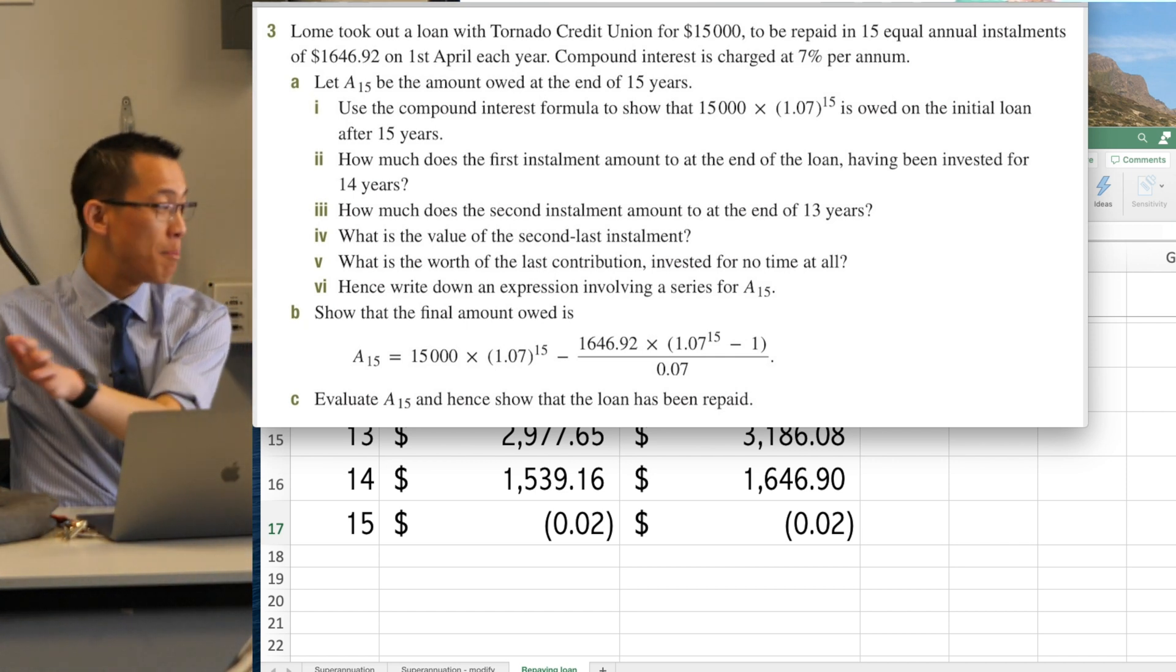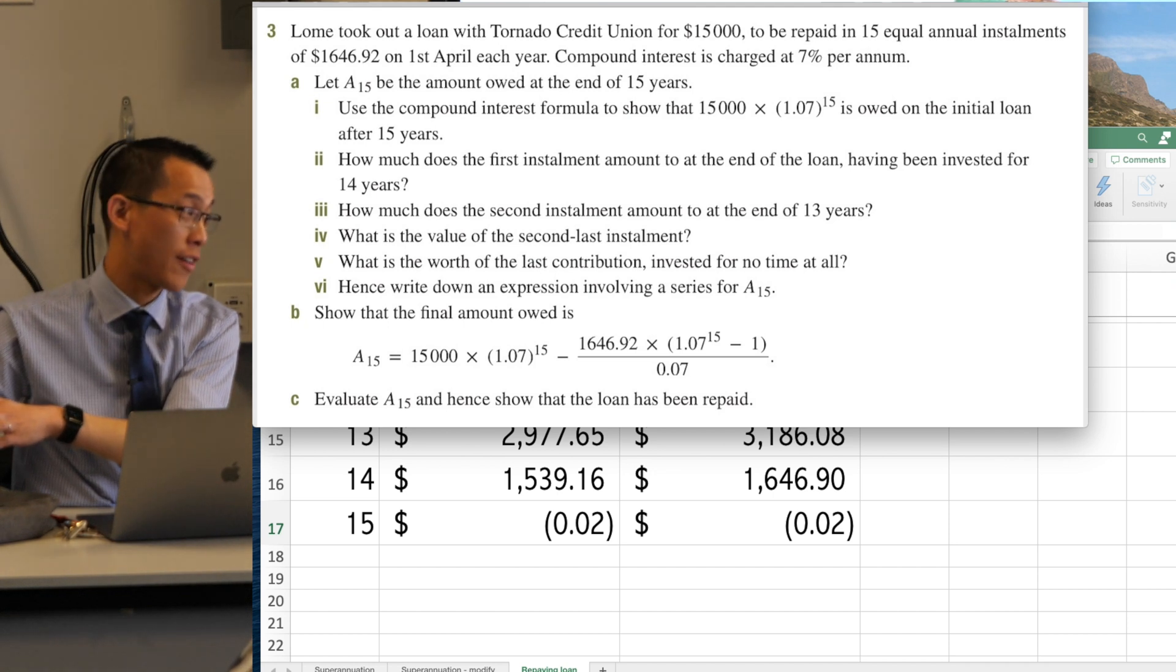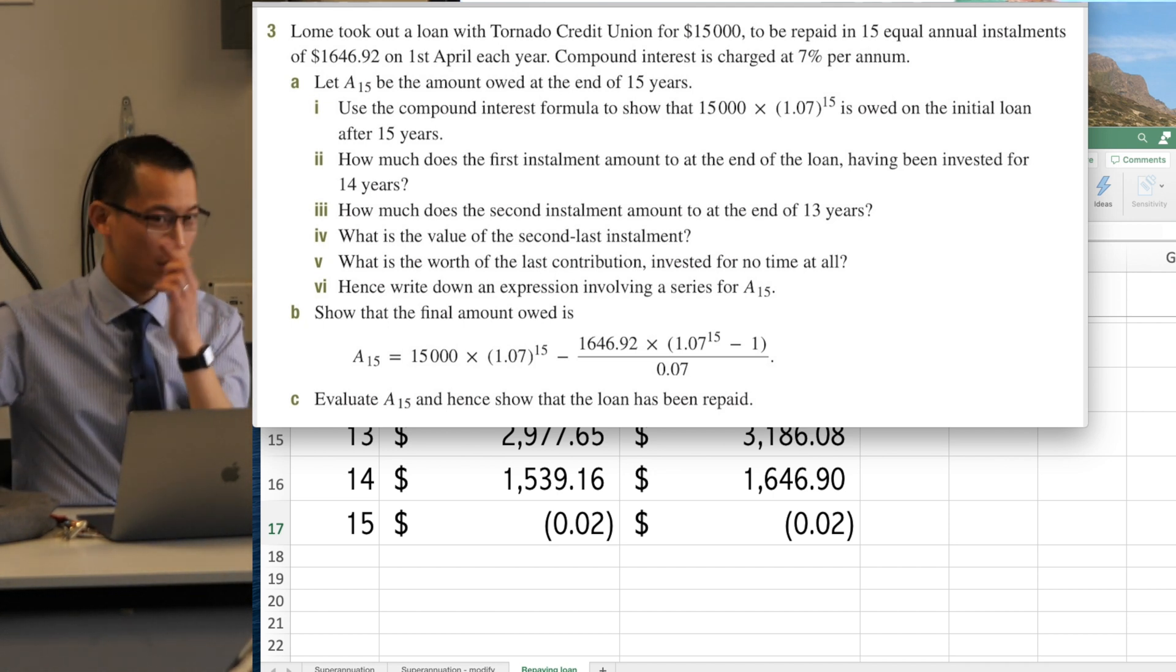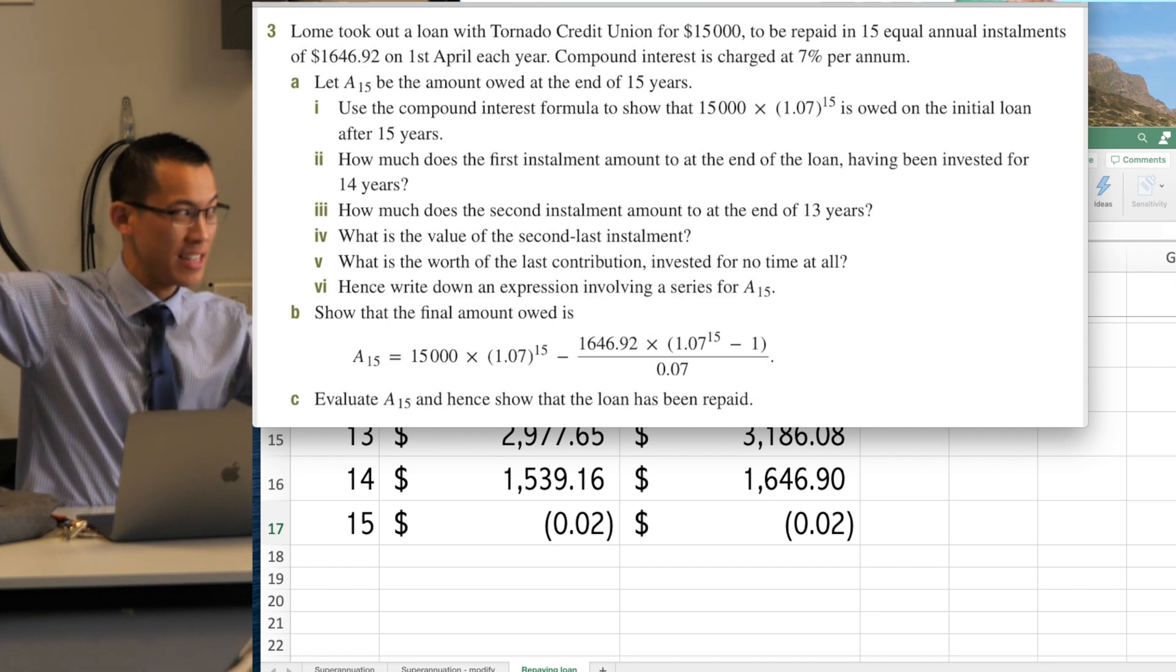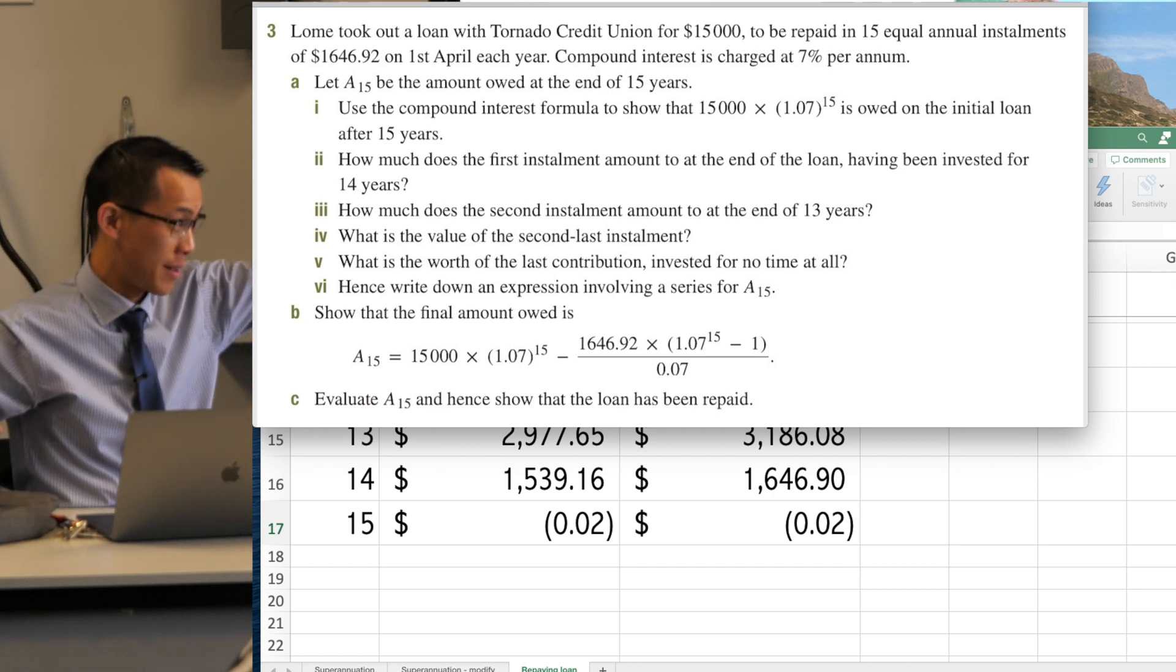Your bank account will never pay you 20% or 25% interest. It might pay you like 3% or 4%, right? So what you gain here isn't as good as what you can get rid of here. Does that make sense? Okay.